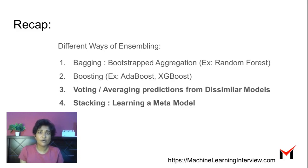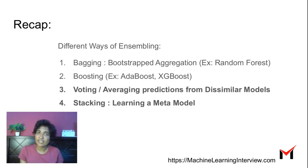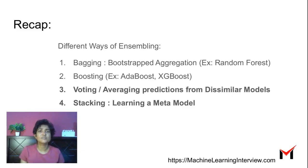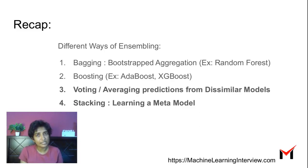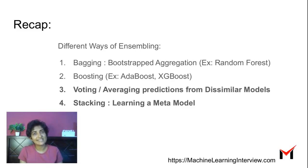To recap: we looked at different ways of ensembling. Bagging and boosting are commonly used — for instance with random forest and XGBoost respectively. We also looked at ways to combine different types of ML models through voting or averaging for simple combinations of dissimilar models, and then stacking, where we learn a meta model from the outcomes of multiple different ML models trained for the same task, assigning them different weightage. Check the sklearn documentation for more information.